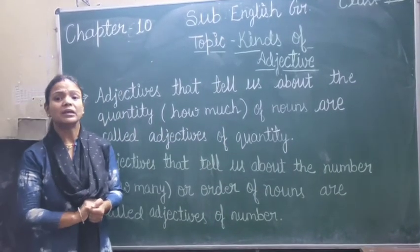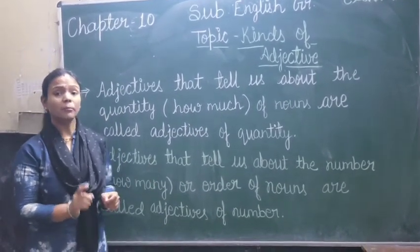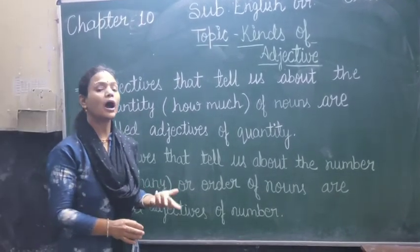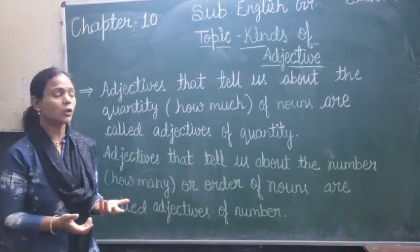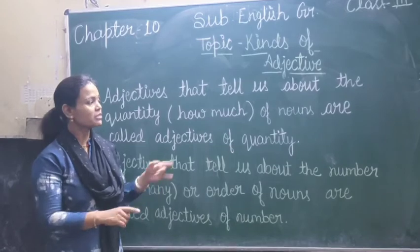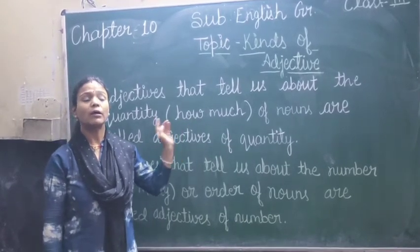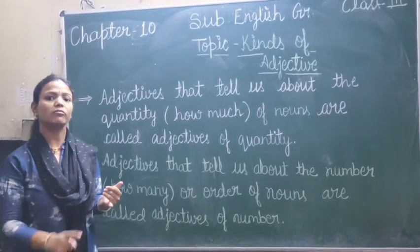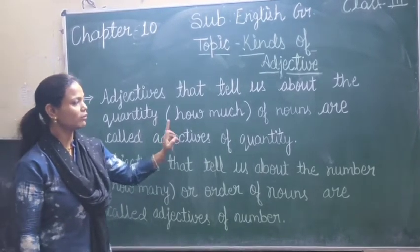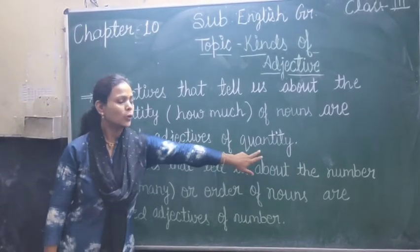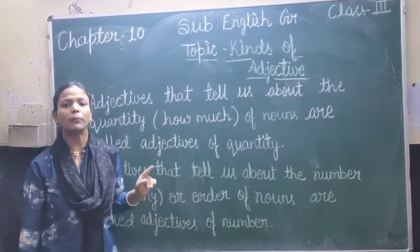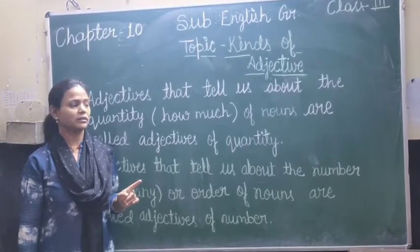How much means? Aisi cheez jise hum number mein count nahi kar sakte. Like, how much milk? Milk ko number mein count kar sakte hain? Nahi kar sakte. Wahan measurement ki zaroorat hoti hai — like 1 liter, 2 liter, 2 kg. To wo ho jata hai adjective of quantity. Usmein how much aayega. How much means jise aap count nahi kar sakte.